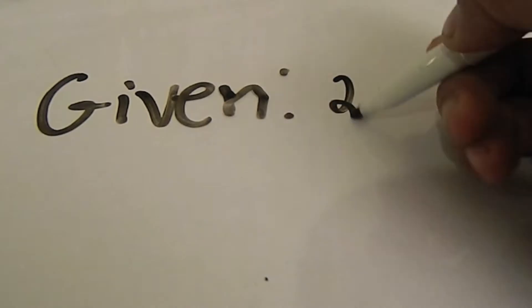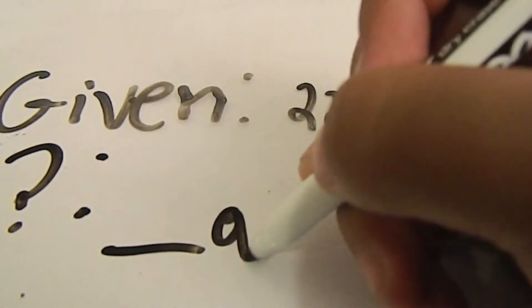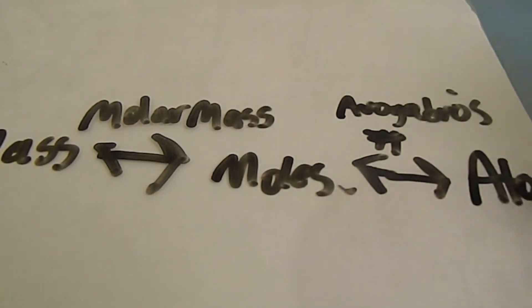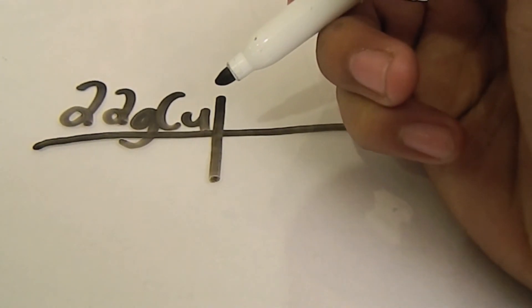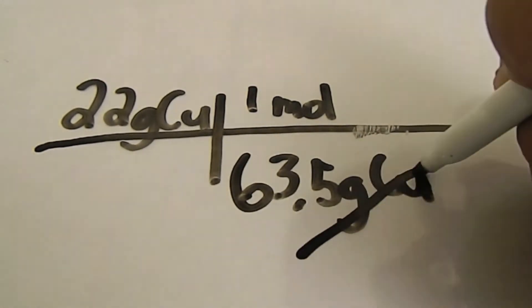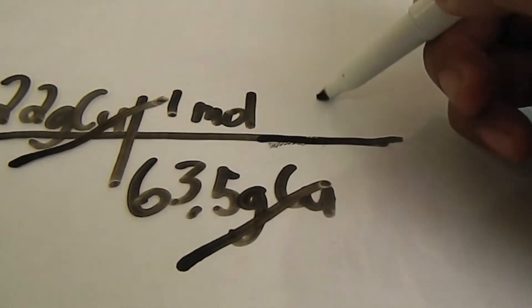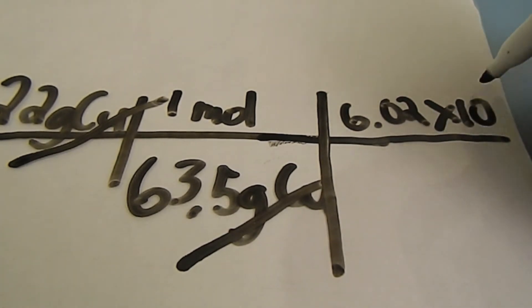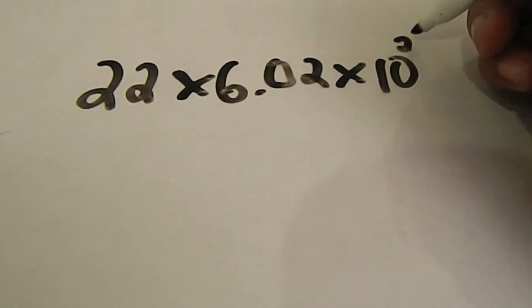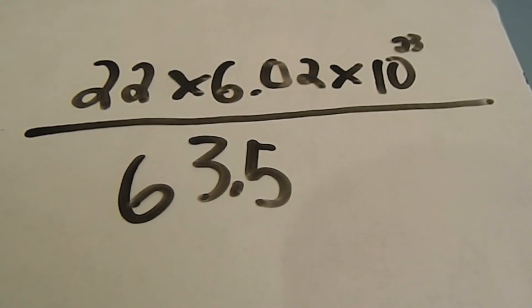After you identify the problem, you write your given. Then, after you write the given, you write down what you're looking for. After writing down your given and identifying what you're looking for, you write down your conversion factor. Next, you start your dimensional analysis. First, you write your given, then set up a conversion factor to make cancellations of units. Then you multiply the numbers on the top and divide the number on the bottom. After you are done doing the math, you finally get what you were looking for.